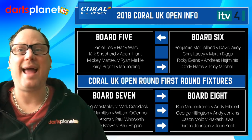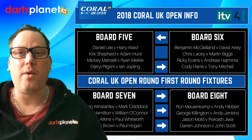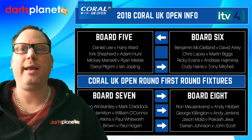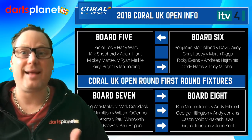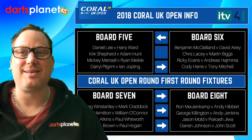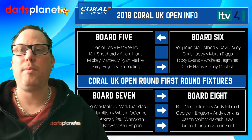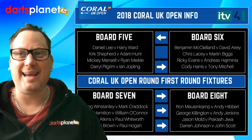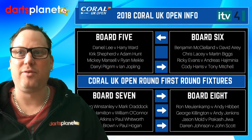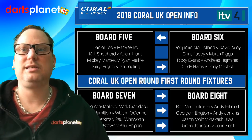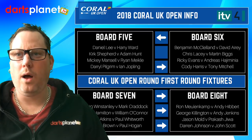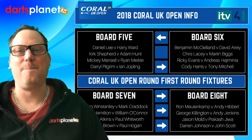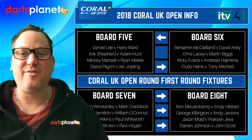Board seven sees Craig Stanley against Mark Craddock, Andy Hamilton against William O'Connor — though I think O'Connor may be out — Martin Atkins against Paul Whitworth, and Darren Brown against Paul Hogan, who we talked about earlier. Board eight has Ron Moolenkamp against Andy Hibbert, George Killington against Andy Jenkins, Jason Mild against Prakash Jua, and Darren Johnson against John Scott.